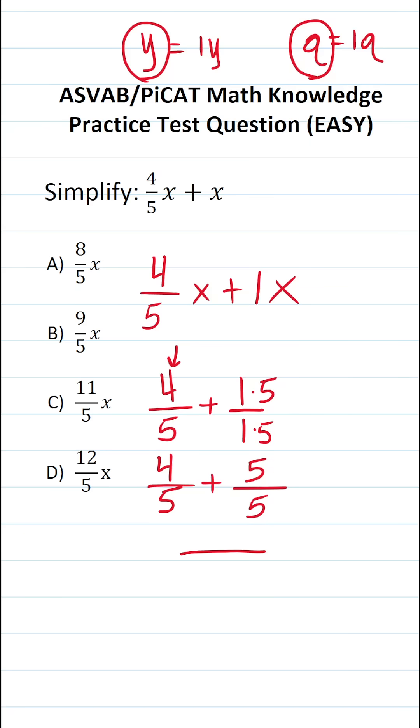When you add fractions, you keep your denominator the same and you add your numerator. This becomes four plus five, which is going to be nine over five.